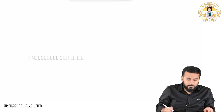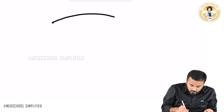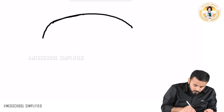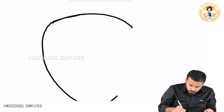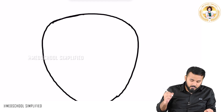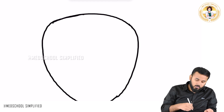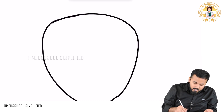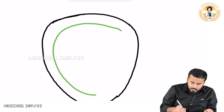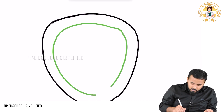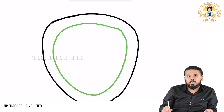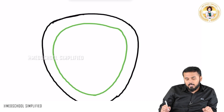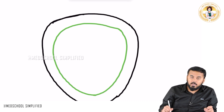For that, first of all let me draw a picture over here. So if this is the penis, the outer layer which you can see here is called as skin. After that you have got this green color layer, and this green color layer is called as deep fascia. The other name for this deep fascia is Buck's fascia.